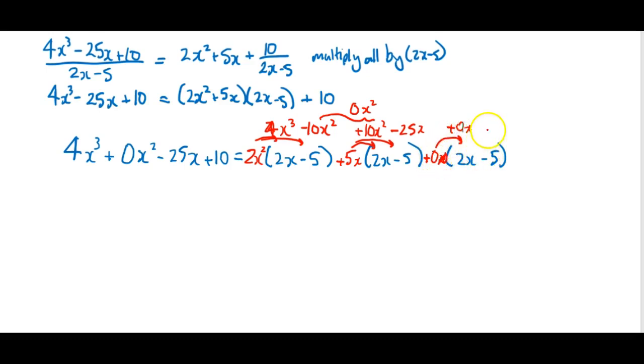And when I multiply that second term I get 0 as well. So that takes care of all the things I need. I have the minus 25x. What I don't have is the remainder of 10. Because I've only got 0 here. So I add 10 on to the end.